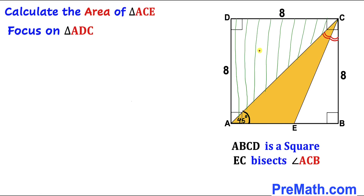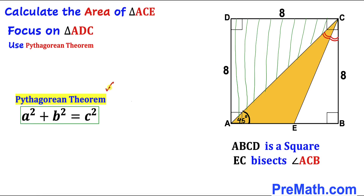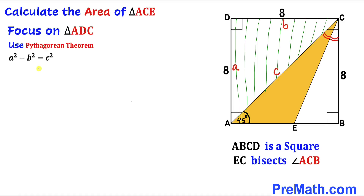Let's focus on triangle ADC and calculate the length of diagonal AC. Since this is a right triangle, we are going to use the Pythagorean theorem: A² + B² = C², where the longest side is C, and the two legs are A and B.